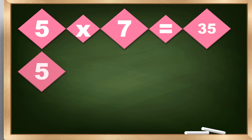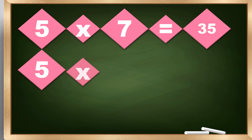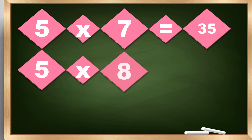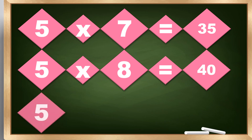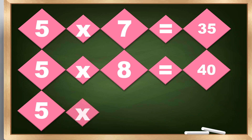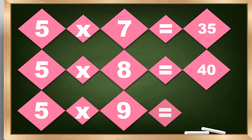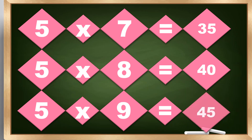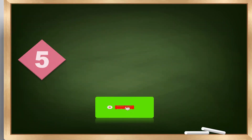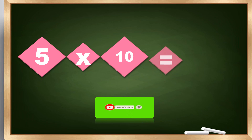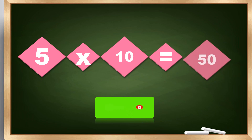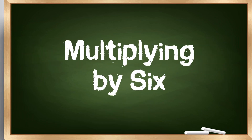5 times 7 equals 35. 5 times 8 equals 40. 5 times 9 equals 45. 5 times 10 equals 50. Multiplying by 6.